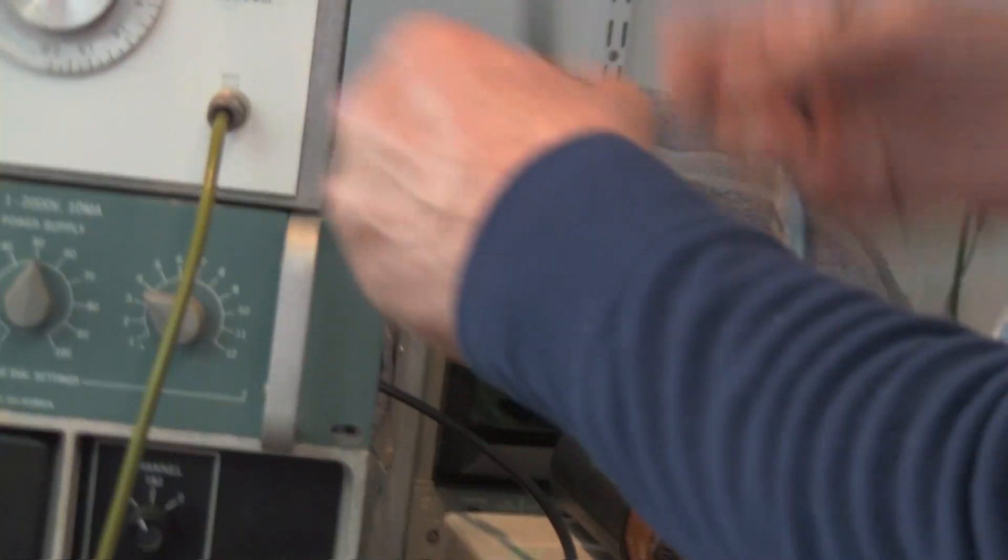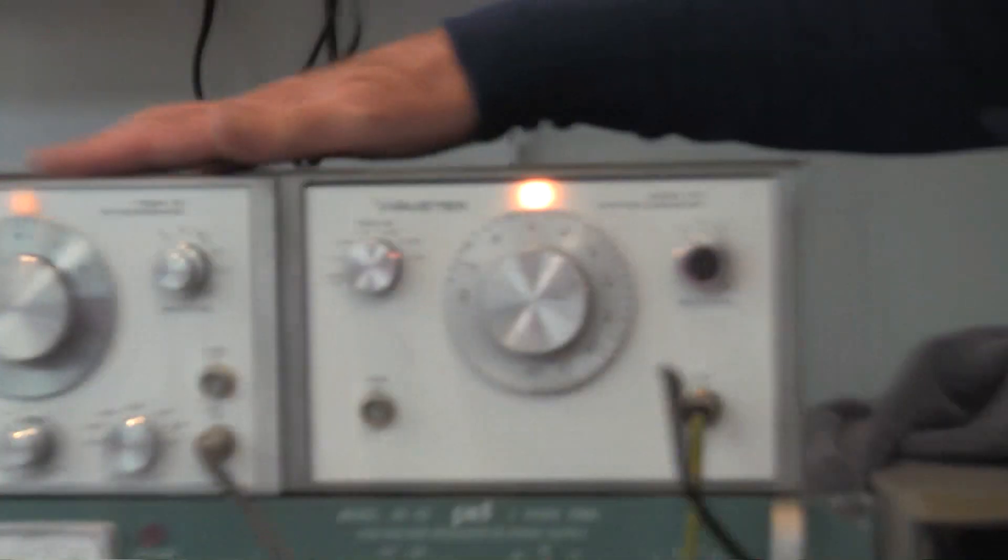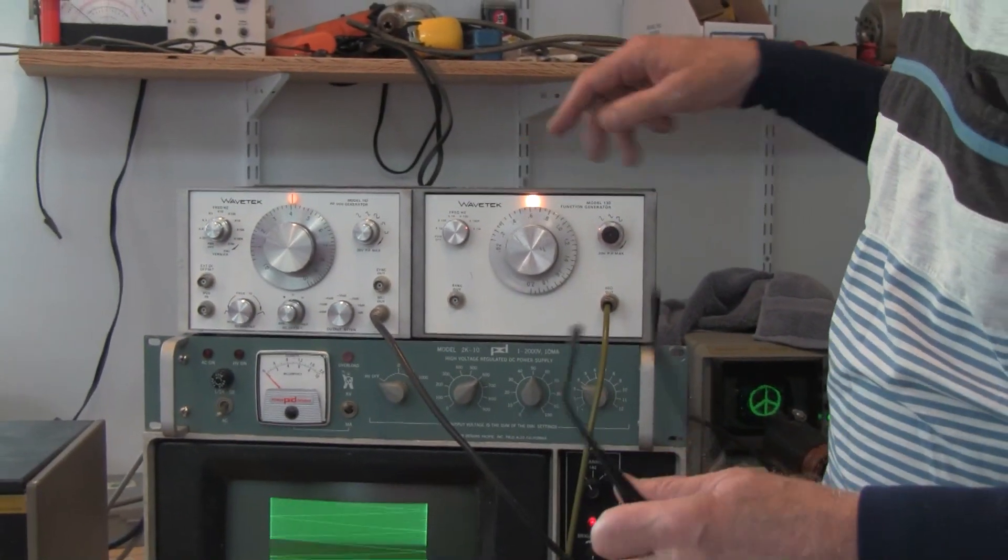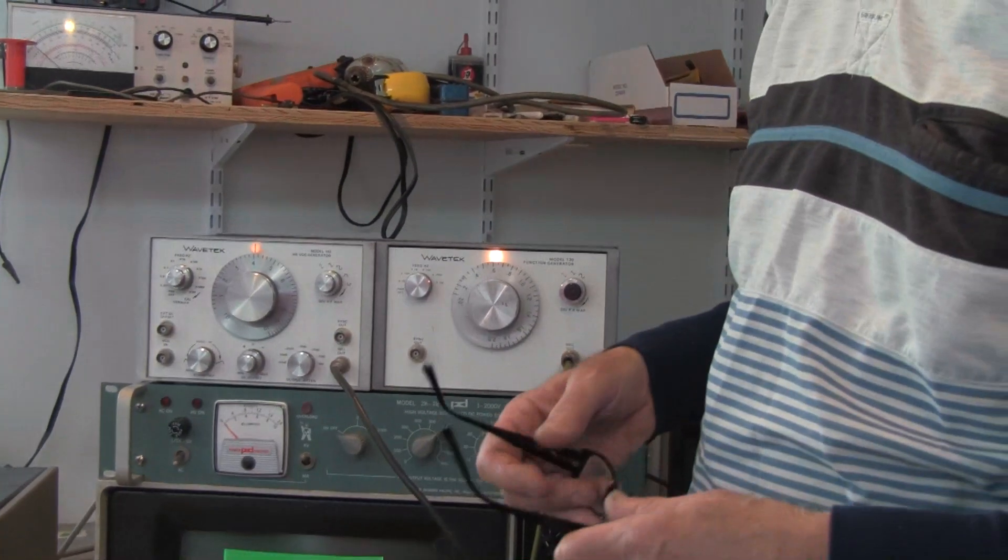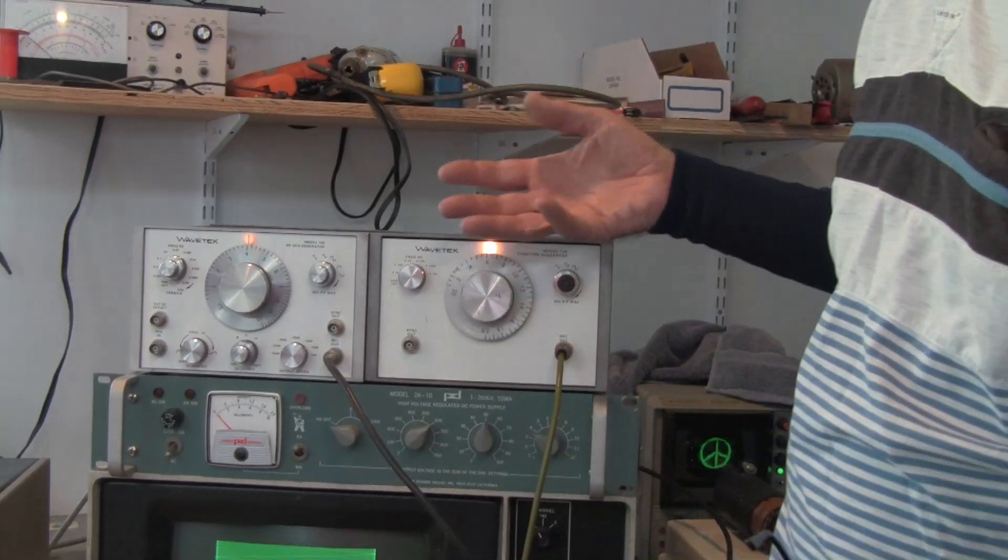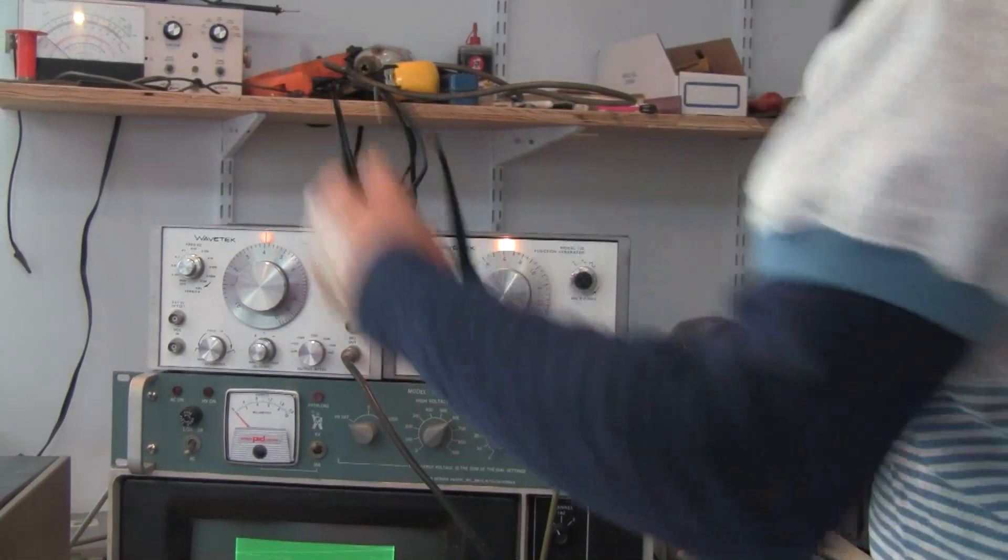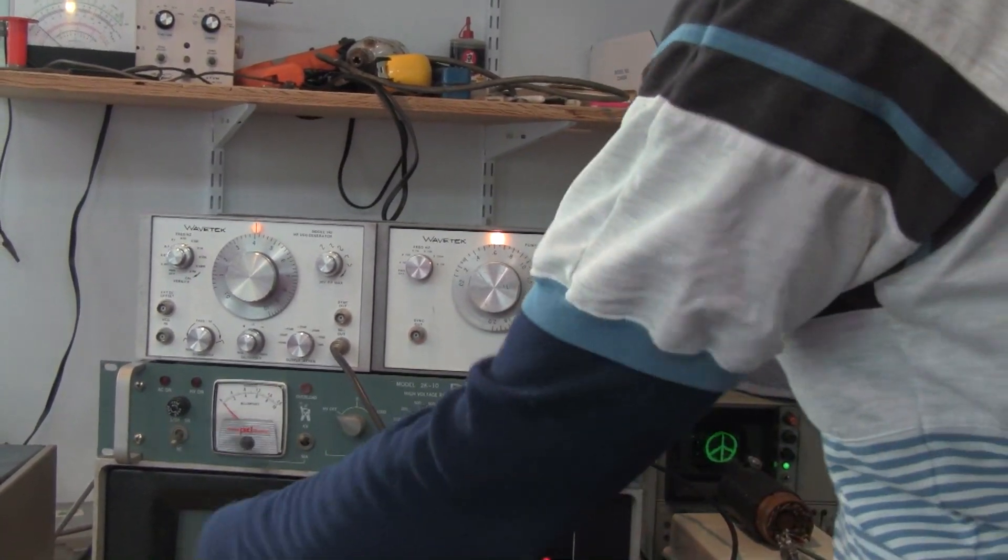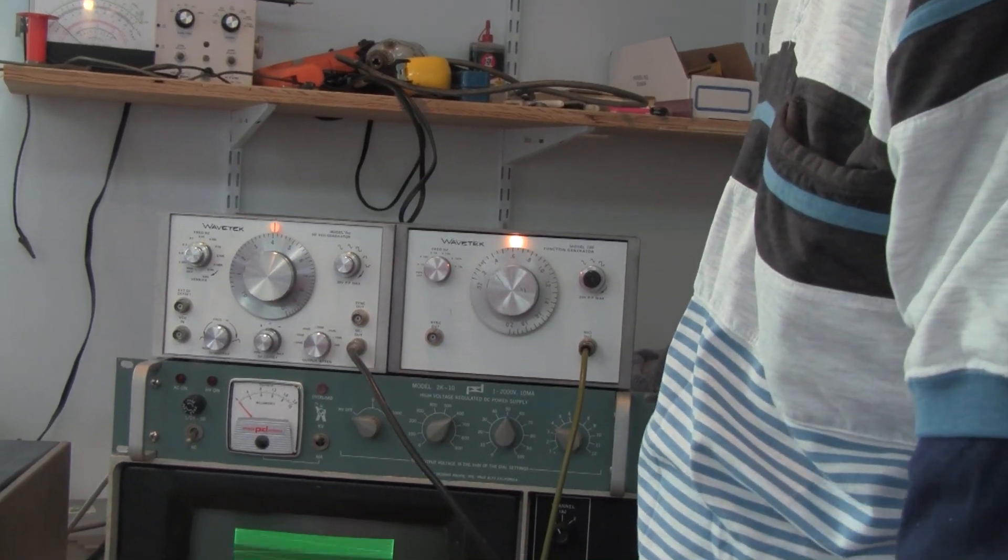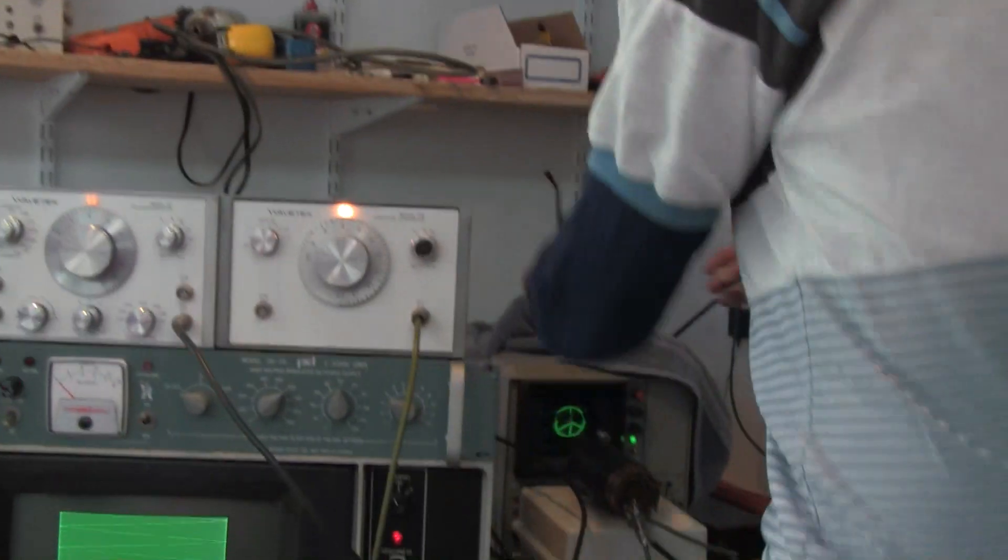And the idea is you take the output of the phototube and you vary the velocity of scanning. It turns out that the bandwidth of the VCO input of this thing is not good enough, so I cheat. And so instead of varying that, I simply add the output of the phototube to the horizontal scanning. So I'm just summing them up. So it's not quite the same thing.